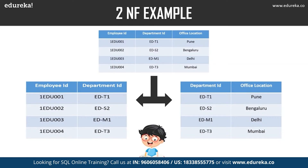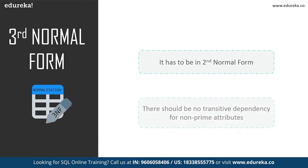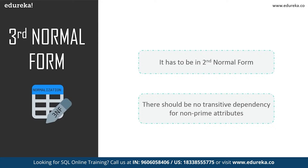Now that we've covered first and second normal form, let's move to third normal form. Third normal form is used to reduce duplication of data and ensure referential integrity. A table must be in second normal form, and no non-prime attribute should be transitively dependent on the primary key through another non-prime attribute. In simple terms, if C depends on B and B depends on A, then C is transitively dependent on A — this should not happen in third normal form.